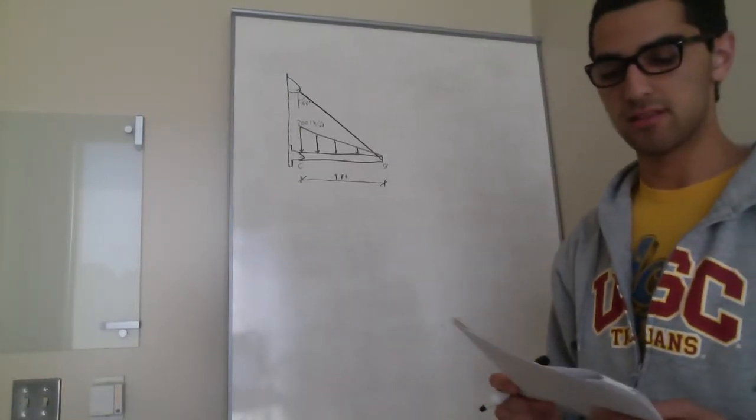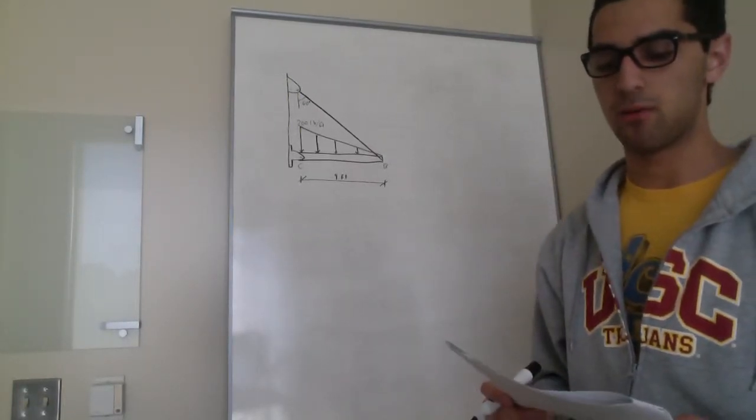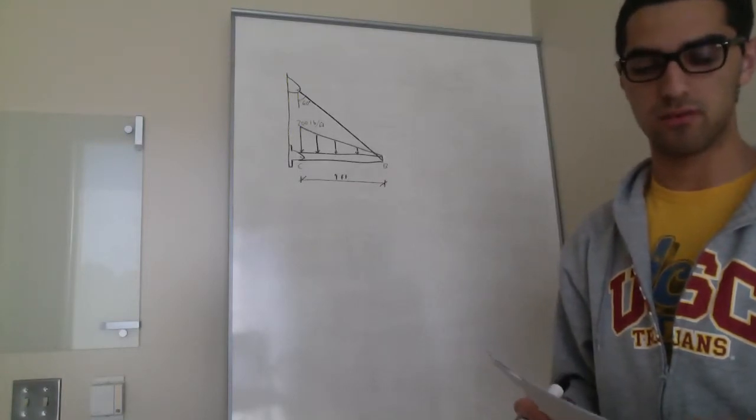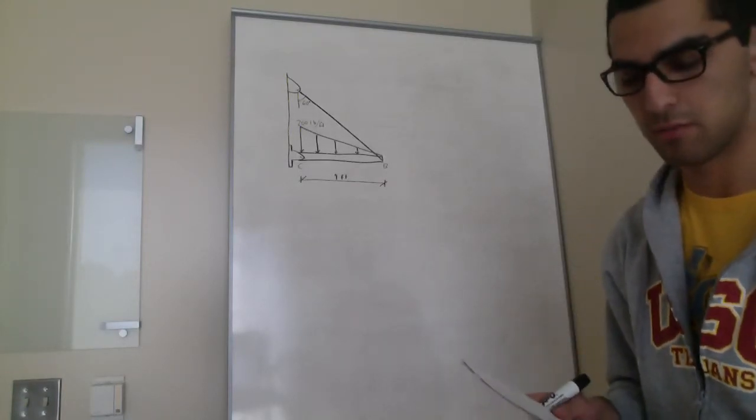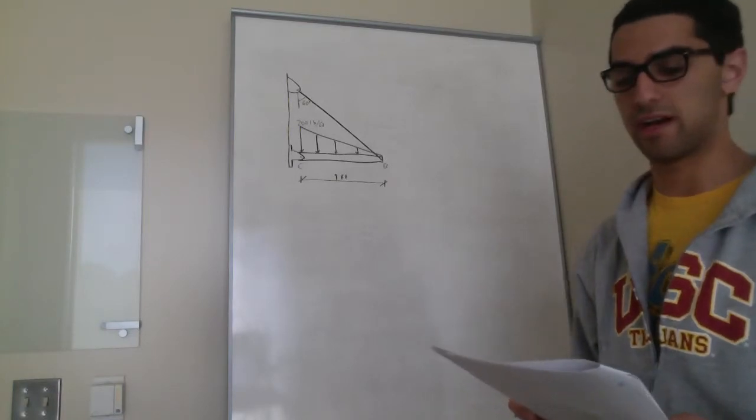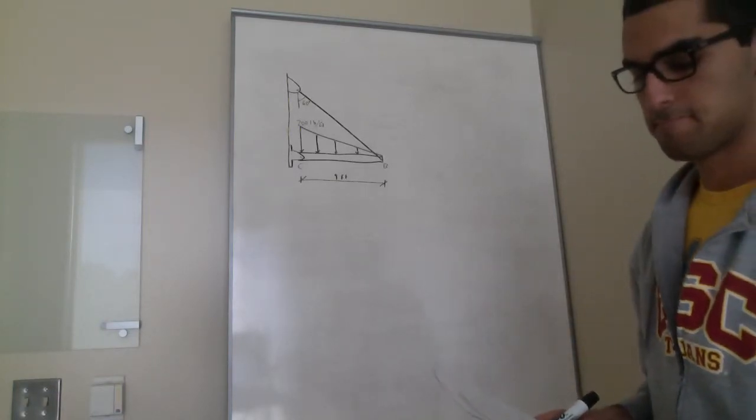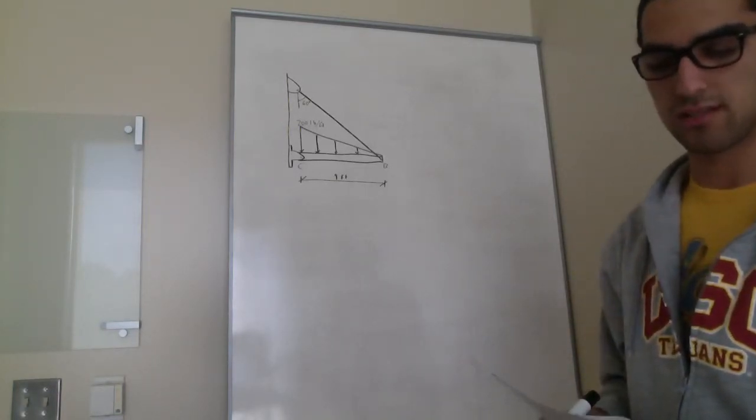The strut is supported by a pin at C and an A36 steel guy wire AB. If the wire has a diameter of 0.2 inches, determine how much it stretches when the distributed load acts on the strut. State if Hooke's law is applicable or not.